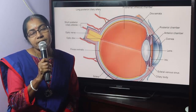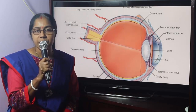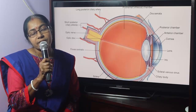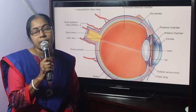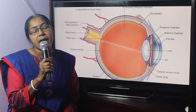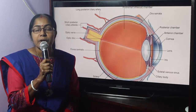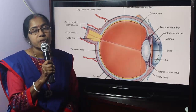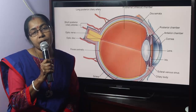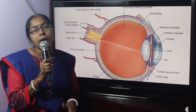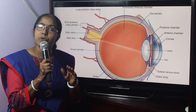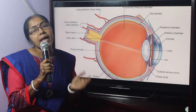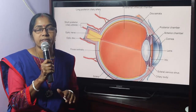The topic is Muscles of the Eyeball — their classification, nerve supply, action, developmental source, etc. The muscles of the eyeball are classified into two types: extraocular muscles and intraocular muscles.